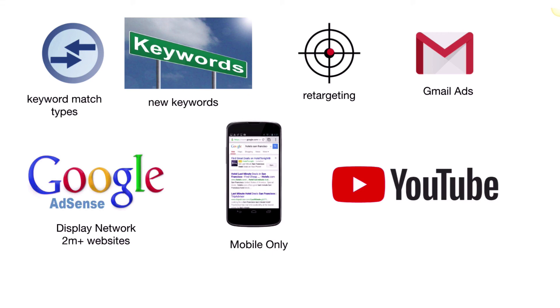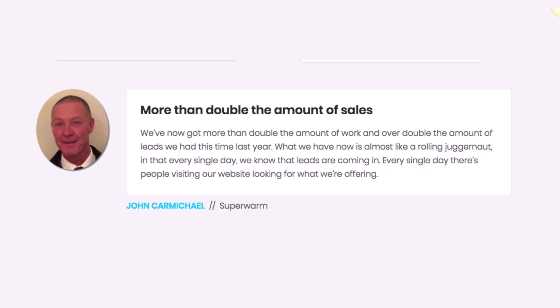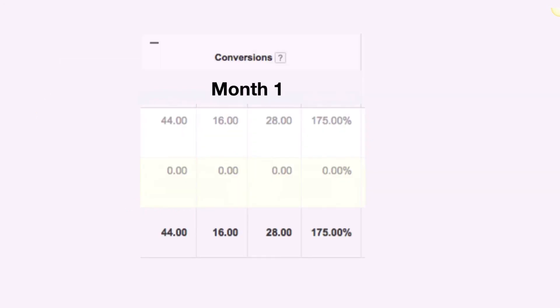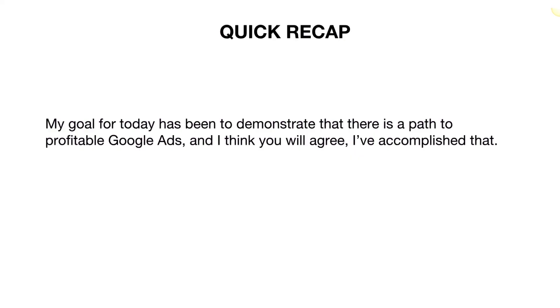And the biggest one of all — the Google Display Network with over 2 million websites. Once you've got your Rapid Revenue Scaling in place, when you go to this network, you're going to convert so much more traffic. Don't just take my word for it — here's one of my clients and here's what he said: 'We now get more than double the amount of work and over double the amount of leads we had this time last year. What we have now is almost like a rolling juggernaut in that every single day we know leads are coming in.' After just one month of optimization and following the four principles, he took his leads from 16 a month to 44 — an increase of 175%.